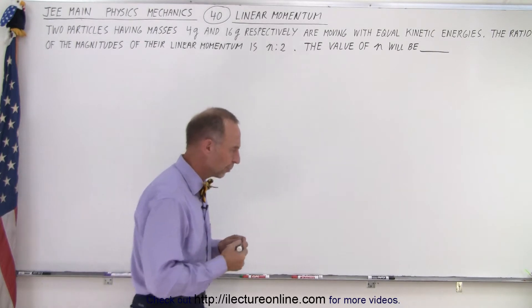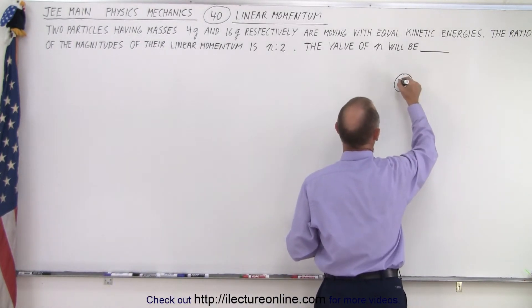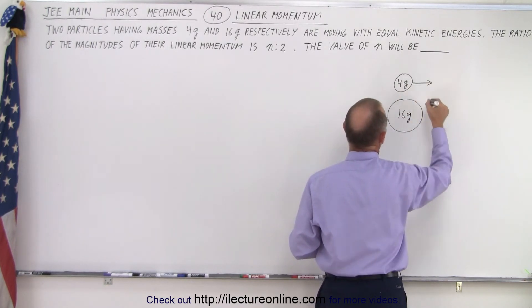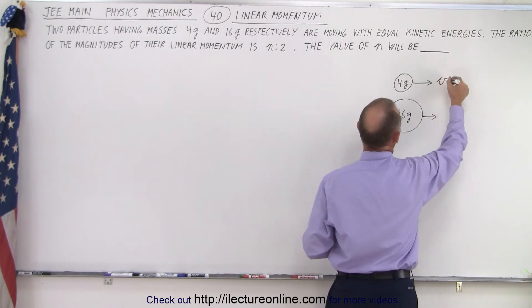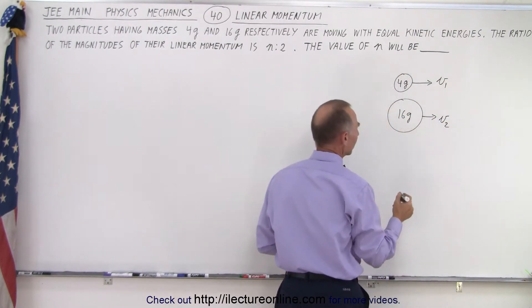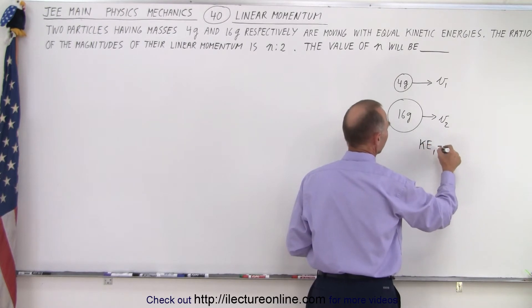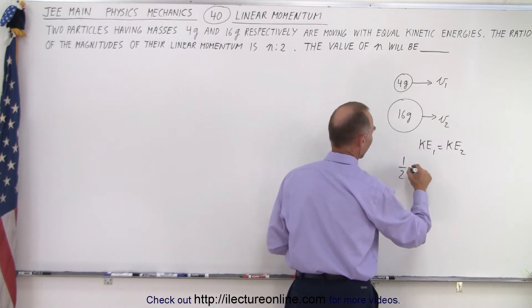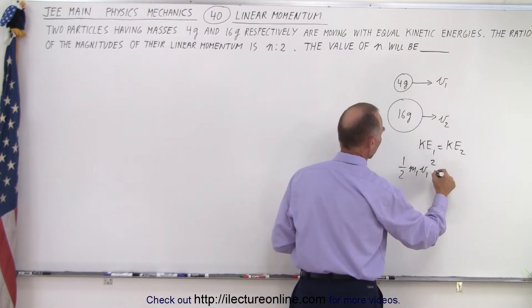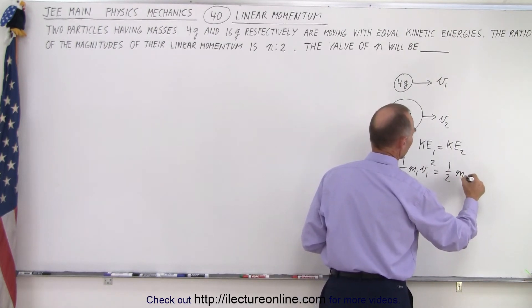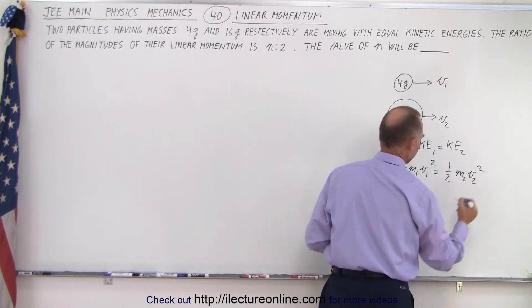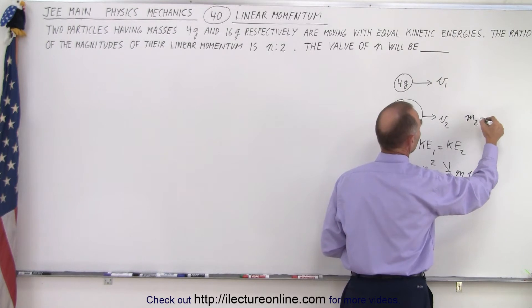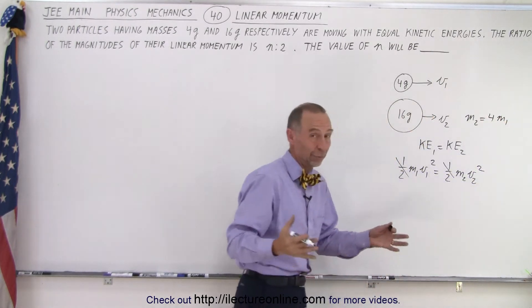So two particles, one 4 grams and the other one 16 grams, and they're moving with their respective velocities, let's call it v1 and v2. And it turns out that kinetic energy 1 is equal to kinetic energy 2. So that means that we have 1 half m1 v1 squared is equal to 1 half m2 v2 squared. Now notice that 1 half's cancel out. And we realize that in this case m2 equals 4 times m1 because it has 4 times the mass.